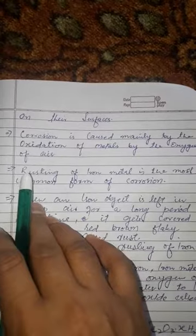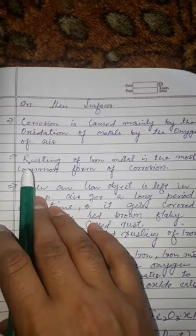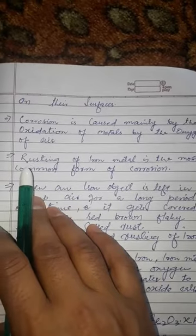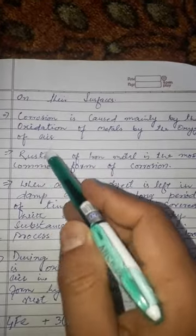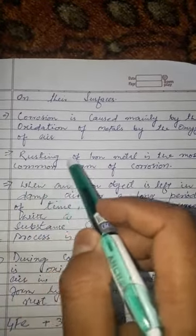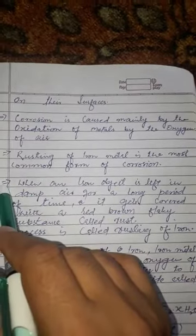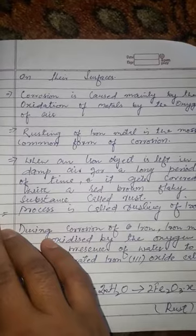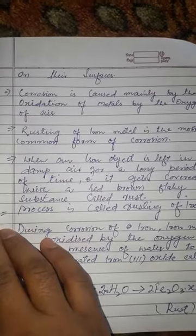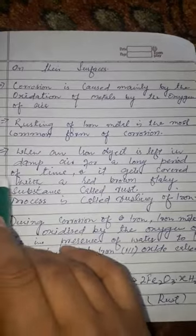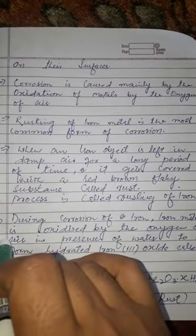The process of rusting starts when metals come into contact with moisture. The rust of iron metal is the most common form of corrosion. How does iron get rusted? When an iron object is left in damp or moist air for a long period of time, rusting occurs.